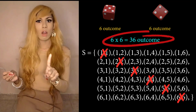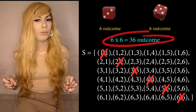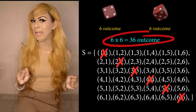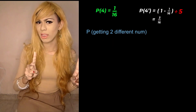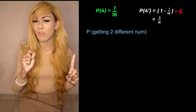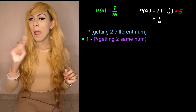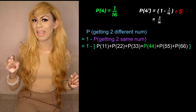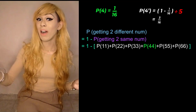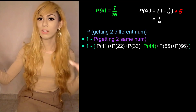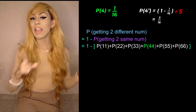To find the probability of getting two different numbers — listing outcomes like one-two, one-three, one-four and so on — would take forever. So instead, we use the complementary method: one minus the probability of getting two same numbers. That means one minus the probability of getting one-one, two-two, three-three, four-four, five-five, or six-six.